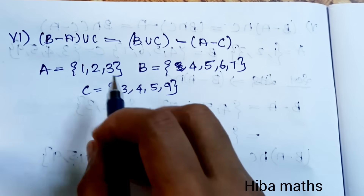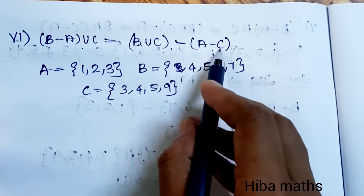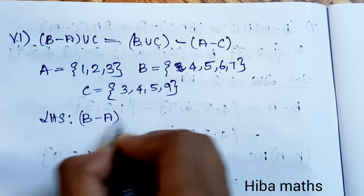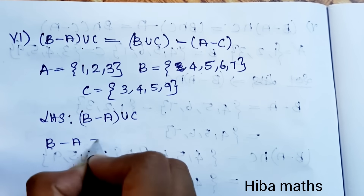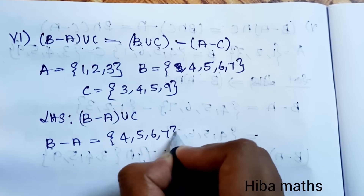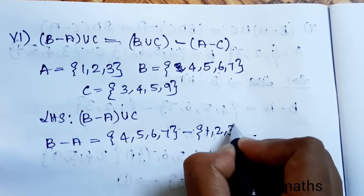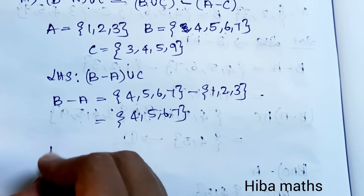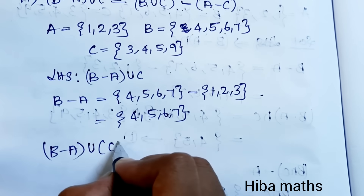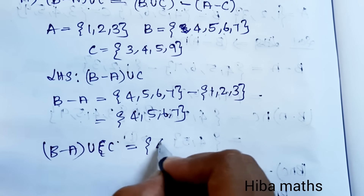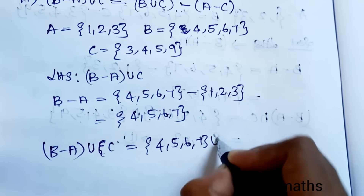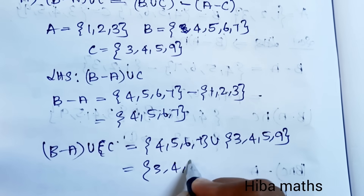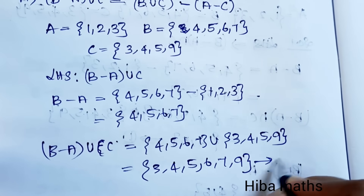Last subdivision: (B-A)∪C = (B∪C)-(A-C). LHS: B-A = {4,5,6,7} (no common with A). Then (B-A)∪C = {4,5,6,7}∪{3,4,5,9} = {3,4,5,6,7,9}. This is the first result.